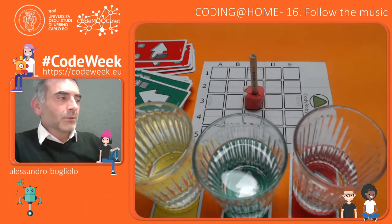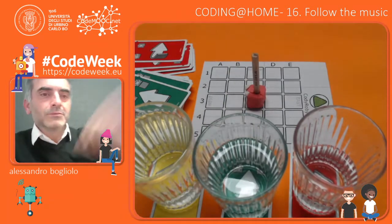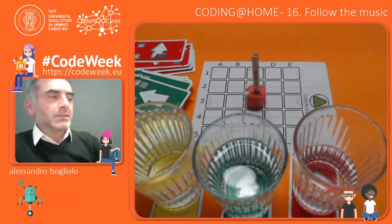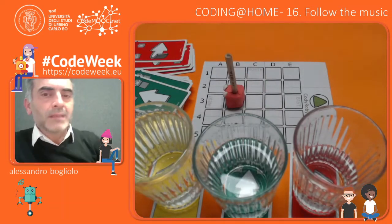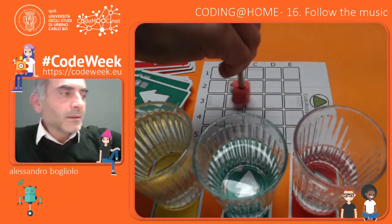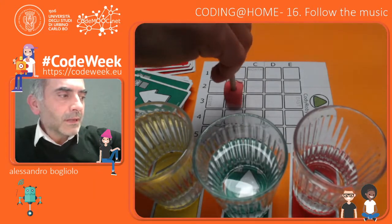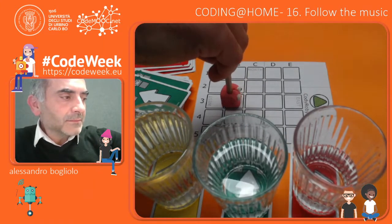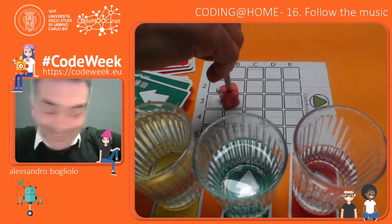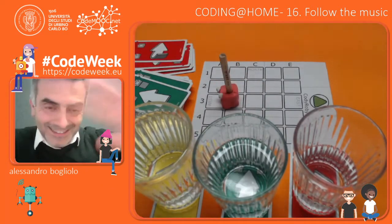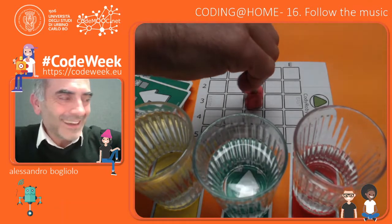As you see, Roby came back to the starting point after having moved one step forward. Because: forward, left, left, forward, right, right.